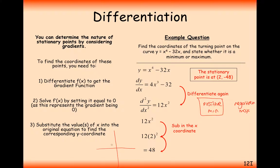So the graph of this function is going to look something like an x-squared graph — it's going to look roughly like this. This point here is the minimum point on this graph, having the minimum y-coordinate at (2, −48). It's just a coincidence that these 48s have come out to be the positive and negative of each other — that really wouldn't usually happen.